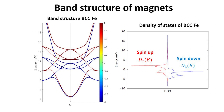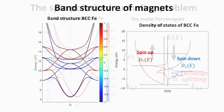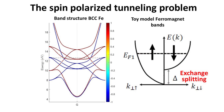In what follows, we consider the simplest band model that captures this feature to demonstrate spin-dependent tunneling. Our simplified model corresponds to a free electron model with parabolic bands for each spin configuration, displaced in energy due to the exchange spin splitting. The spin splitting is denoted by delta, and only half of the bands with opposite spin states are represented here for simplicity. Because we are considering two spin states, the relevant wave functions for describing tunneling processes must contain information about both spin components.